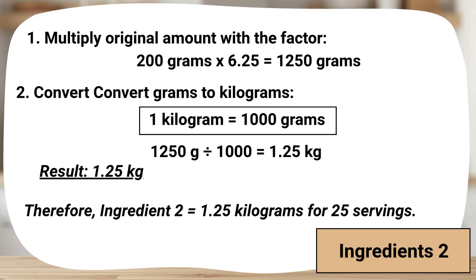Ingredient 2 — Step 1: Multiply by the conversion factor: 200 grams × 6.25 = 1,250 grams. The new amount is 1,250 grams. Step 2: Convert grams to kilograms for easier measurement. Since 1 kilogram equals 1,000 grams: 1,250 grams ÷ 1,000 = 1.25 kilograms. Therefore, ingredient 2 equals 1.25 kilograms for 25 servings. We multiply the ingredient's original weight by 6.25 to get the new amount, then convert grams to kilograms by dividing by 1,000. That's how 200 grams became 1.25 kilograms.